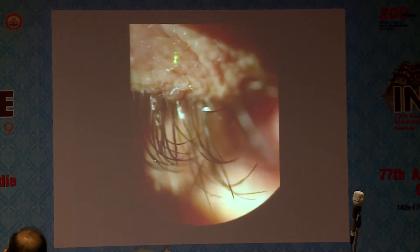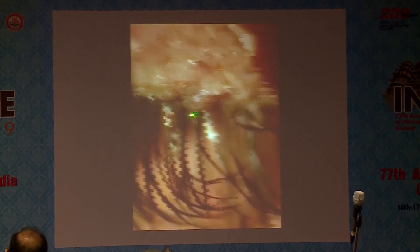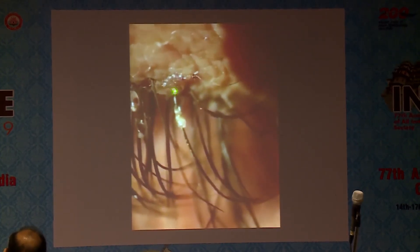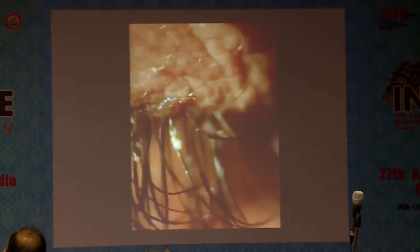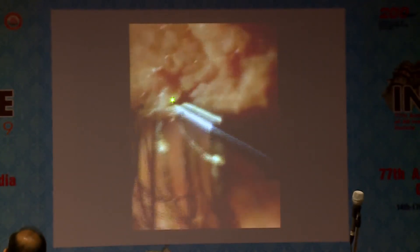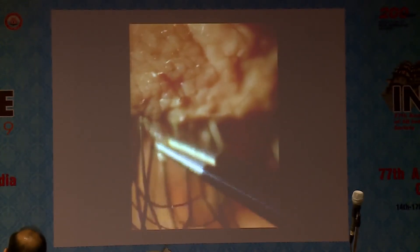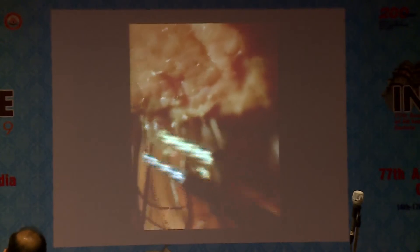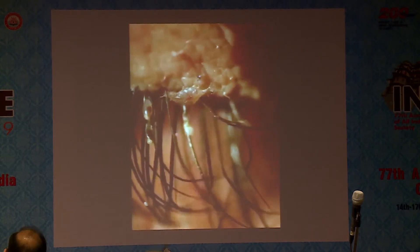In the video, you can see at the base of the lid margin, nicely seated, is the crab louse. This video was made on the slit lamp with a cell phone. The eggs are also visible. This patient had constant complaints of itching and irritation and had been treated with lubricants and antibiotics. I manually removed the louse — you can see how tenaciously they hold the lash; the entire lid comes down and the louse still holds on. All lice and eggs were mechanically removed from the lid margins.